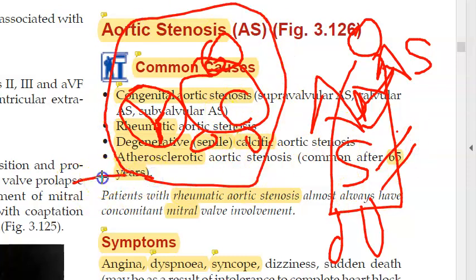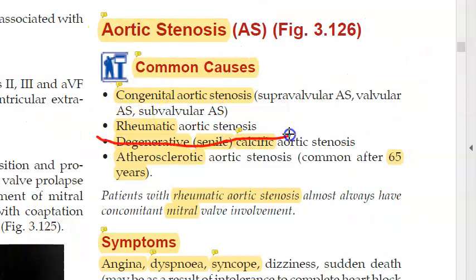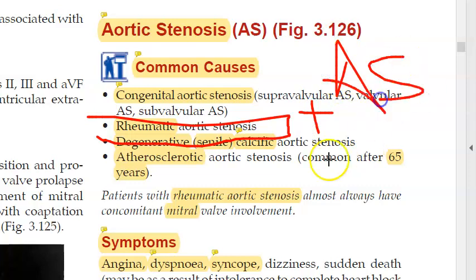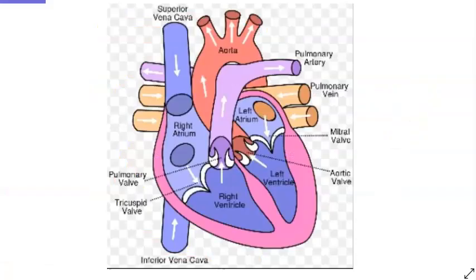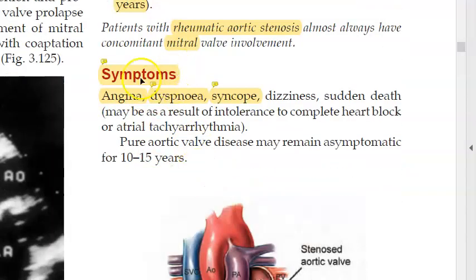In young people you will say Turner syndrome or congenital valvular lesion — instead of tricuspid it could be bicuspid. There is also rheumatic aortic stenosis; whenever that is present, these people can have mitral valve involvement as well. The mitral valve is the most prone, and along with that you can have aortic stenosis.